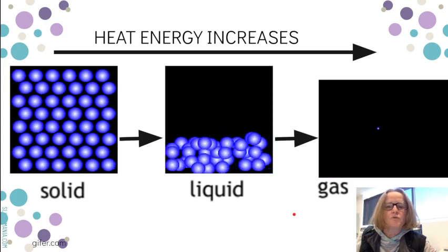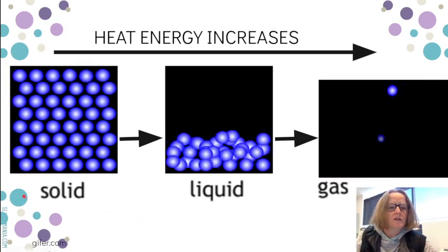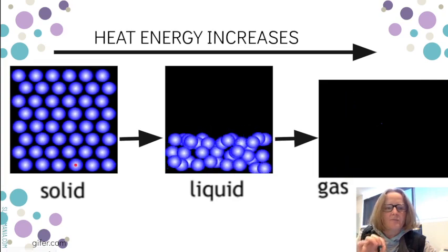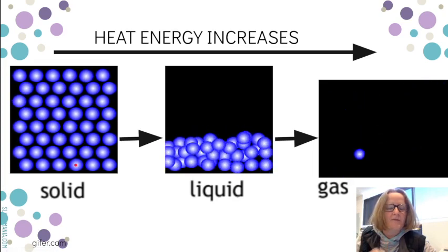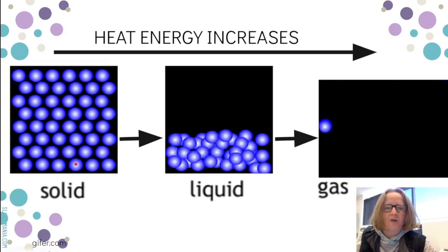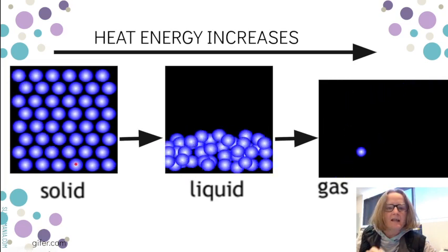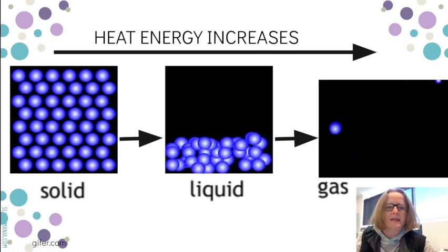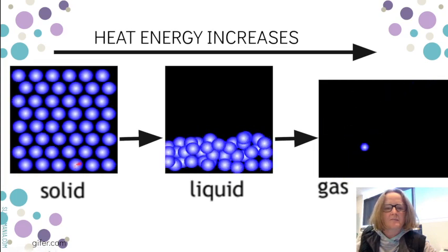So when we look at the movement of particles, these images show that the solid ice, the particles, the water molecules are held in a fixed position but they're not still. They're actually vibrating all the time around that fixed position and as we heat them they actually vibrate faster and faster and eventually they get to a point where they can break away from their neighbors and become a liquid.